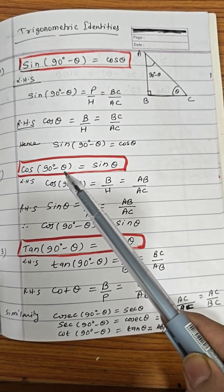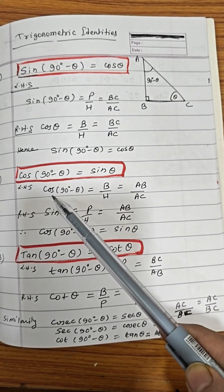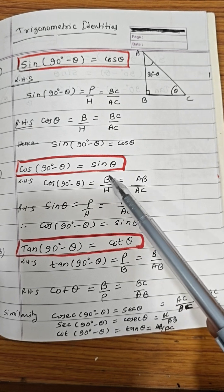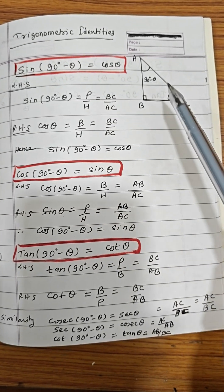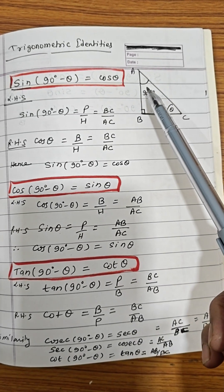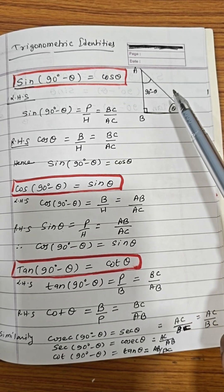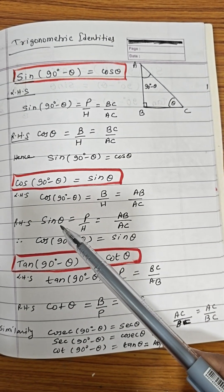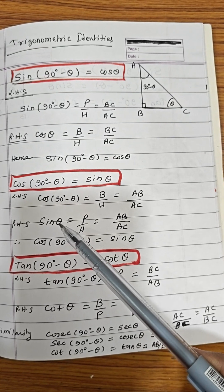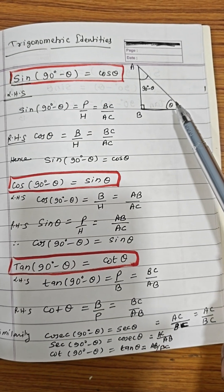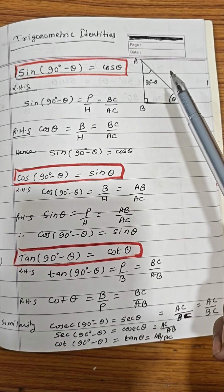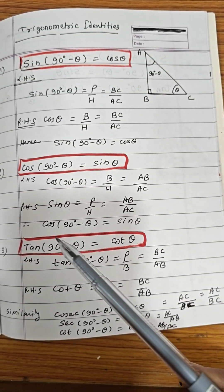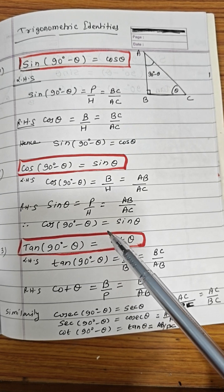Cos(90° - θ) = sin θ — how does it happen? Cos(90° - θ) is base upon hypotenuse, so for angle 90° - θ, AB is the base and AC is the hypotenuse, giving AB/AC. Now sin θ is perpendicular upon hypotenuse, and for angle θ the perpendicular is AB, so sin θ = AB/AC. Both are AB/AC, therefore cos(90° - θ) = sin θ.